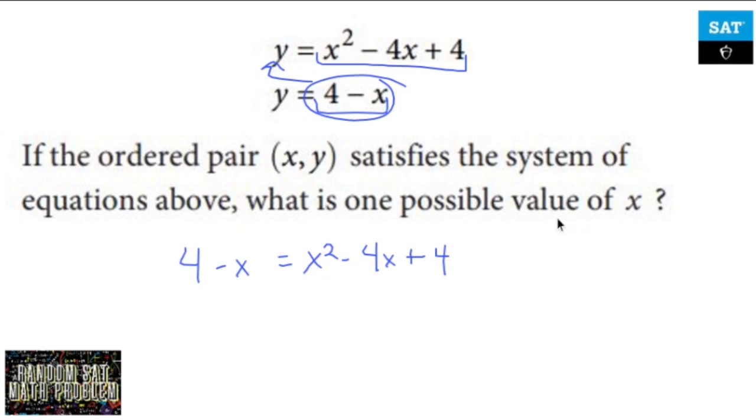Okay, they want one possible value of x. I know there's going to be two of them and this is what we're going to do. We're going to use the zero product property. We're going to subtract 4 from both sides.